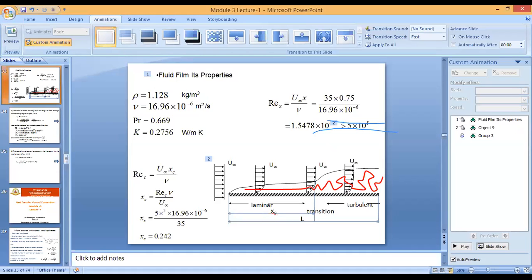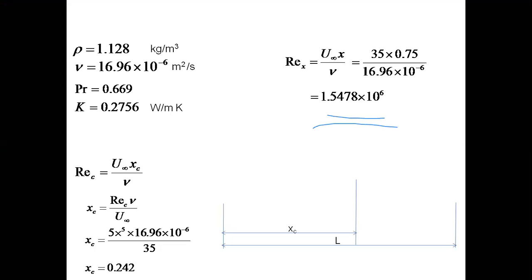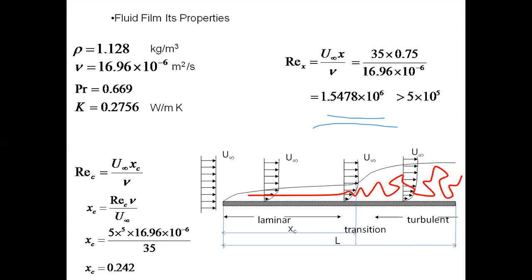We are running out of time so I will finish this quickly. The remaining part will be explained in the next session starting at 11 o'clock — please come back then. From the calculation, the flow is laminar from the leading edge up to a distance of 0.242 meters, after which the flow becomes turbulent.